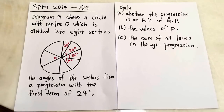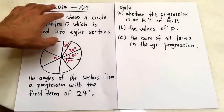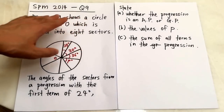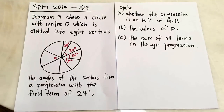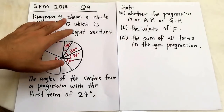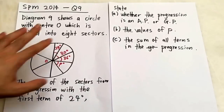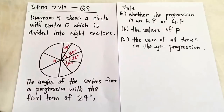Today I'm going to explain about SPM Additional Mathematics 2014, question number 1, Paper 1. For this question, you can see Diagram 9 shows a circle with a center O, which is divided into 8 sectors.